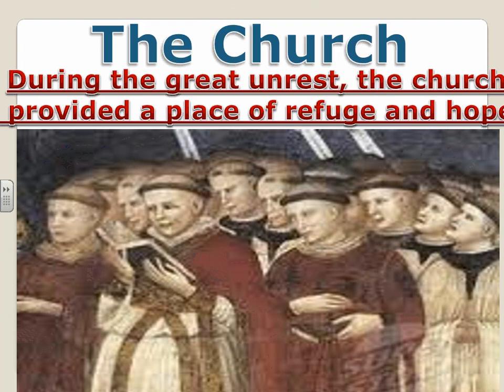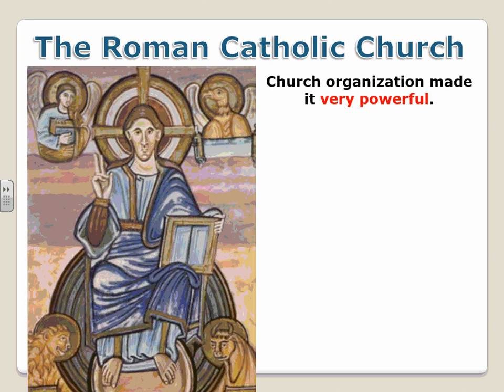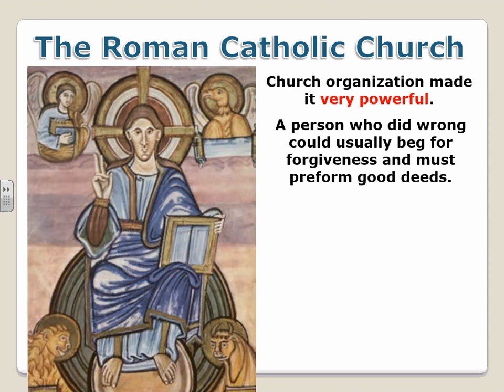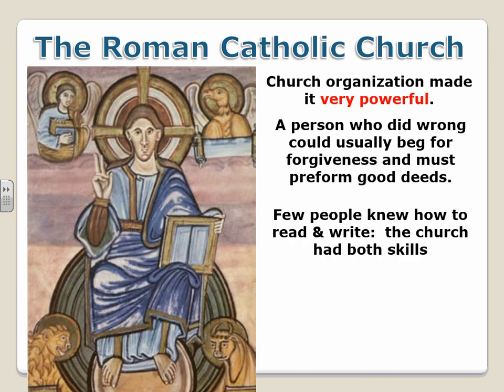For right now, I want to talk about the Catholic Church. If there was one institution that was quite powerful, it was in fact the Catholic Church. During times of great unrest, people turned to the church as a place of refuge. So the Catholic Church was very powerful and very well organized. A person who did wrong could beg for forgiveness and also pay for forgiveness, but they also must perform good deeds. The church during the Middle Ages was very, very powerful, and they also possessed the skill of literacy.